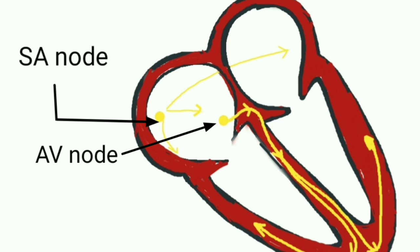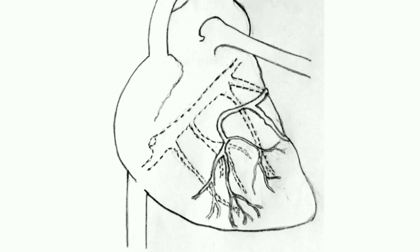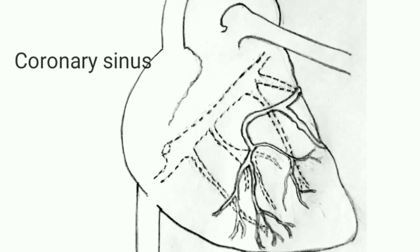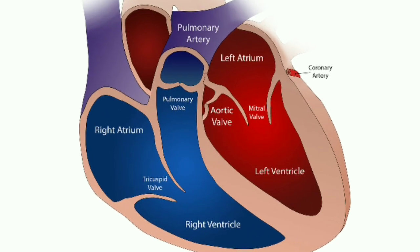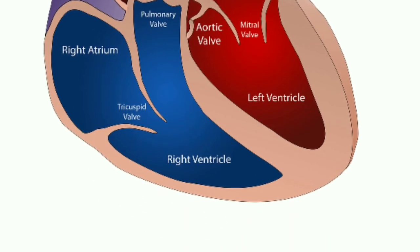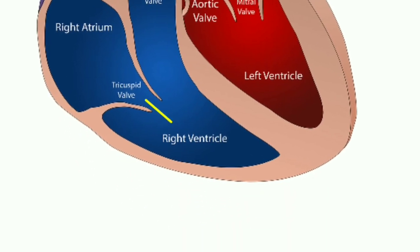The AV node lies on the right side of the partition that divides the atria, near the bottom of the right atrium. This AV node serves as an electrical relay station, slowing the electric current sent by the SA node. The coronary sinus is a collection of smaller veins that merge together to form the sinus. This sinus collects the majority of the cardiac venous blood. The coronary sinus opens into the right atrium between the orifice of the inferior vena cava and the atrioventricular opening.